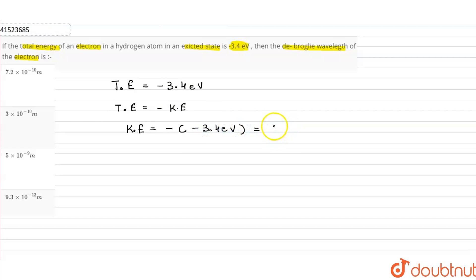Kinetic energy equals 3.4 eV. Now, how can we convert this eV into joules? 3.4 times 1.6 times 10 to the power minus 19, which will be 5.44 times 10 to the power minus 19.